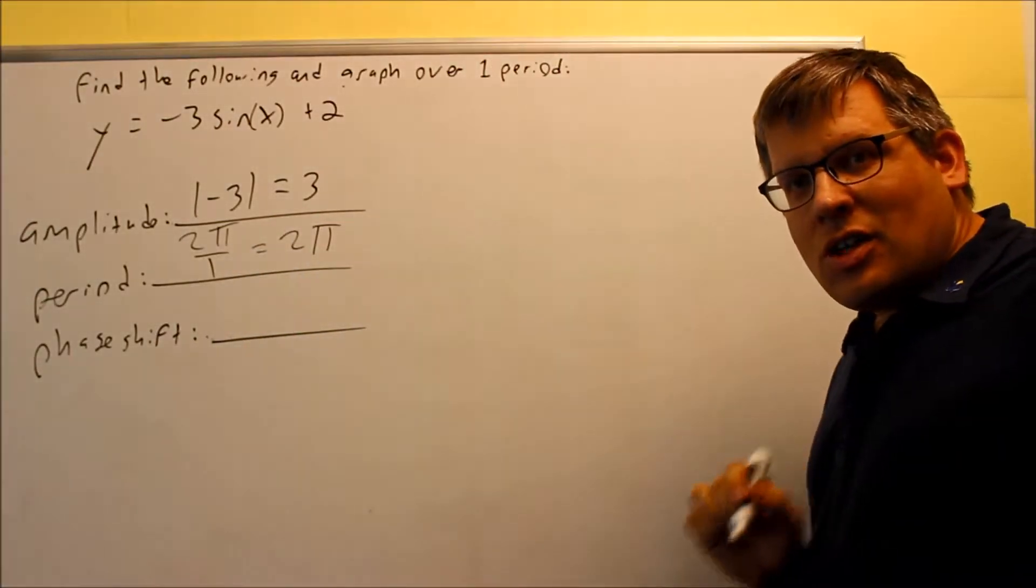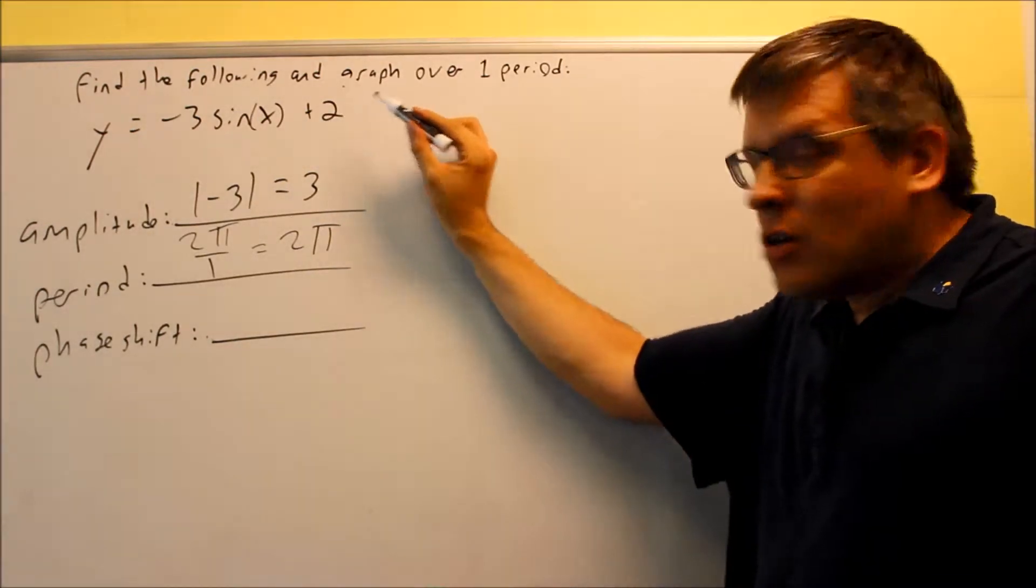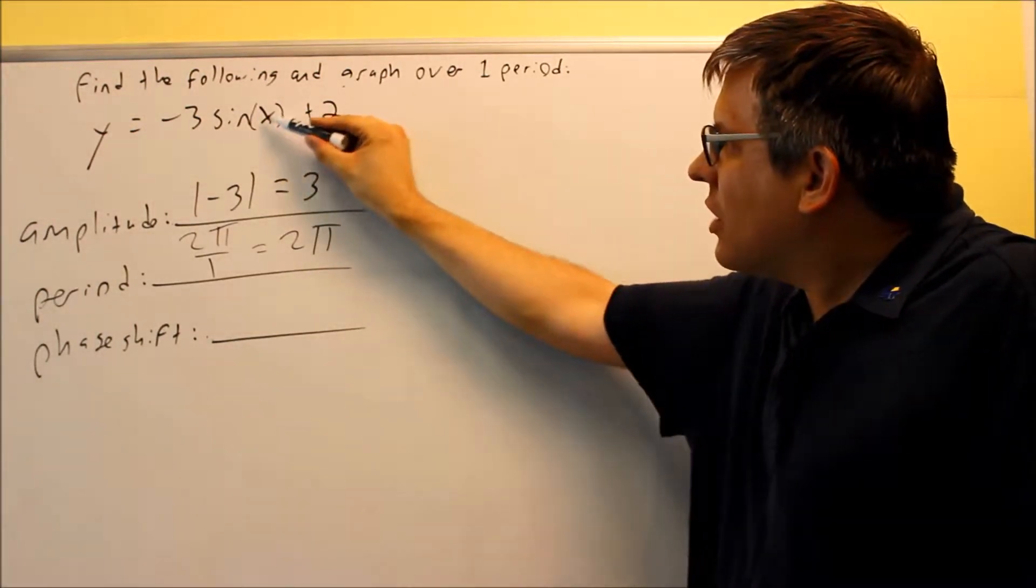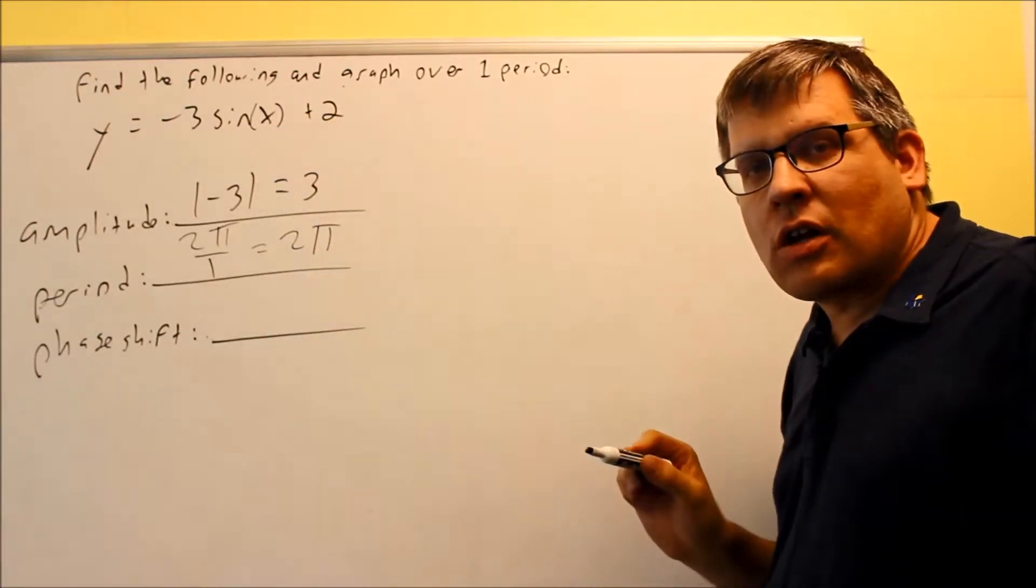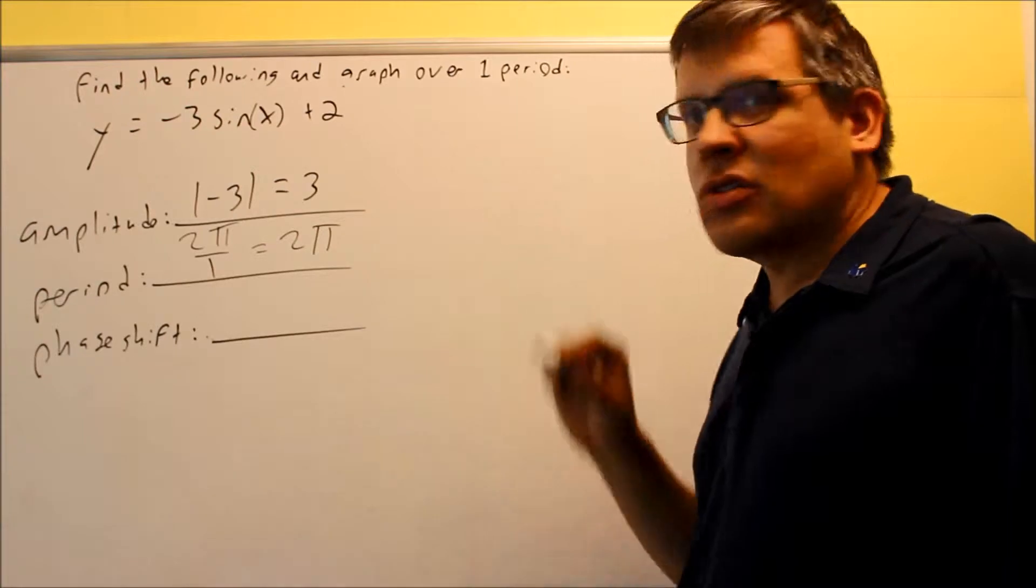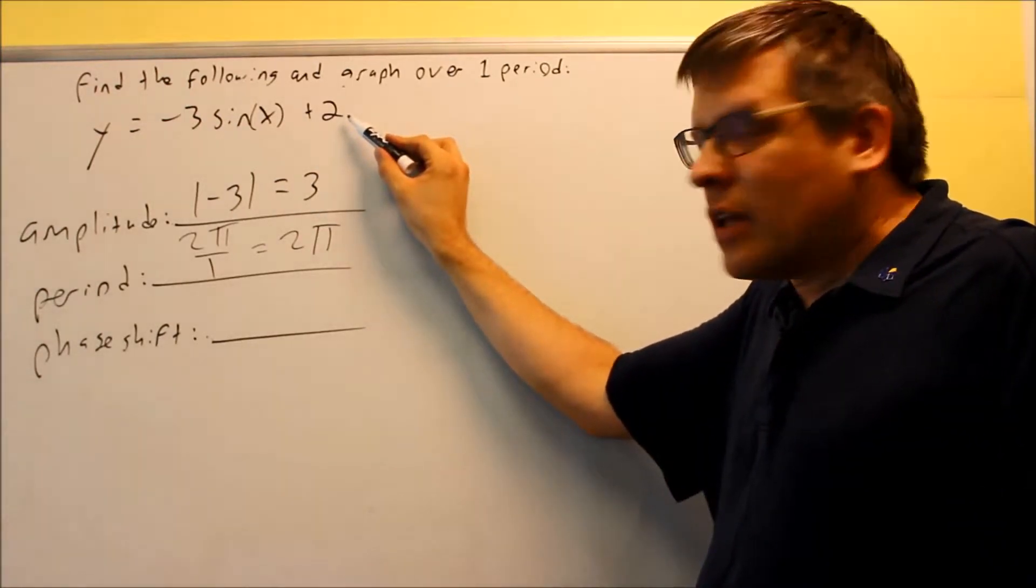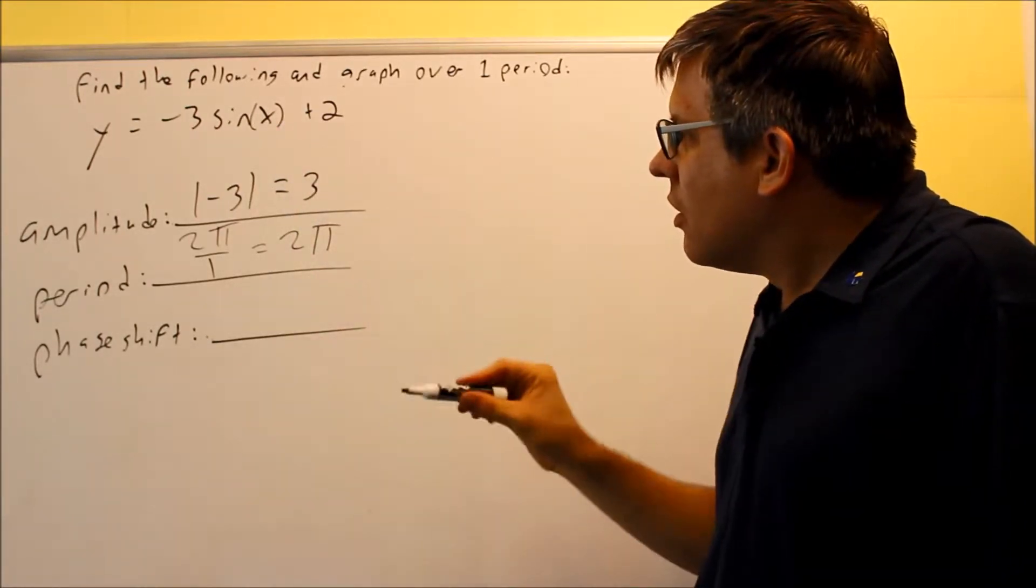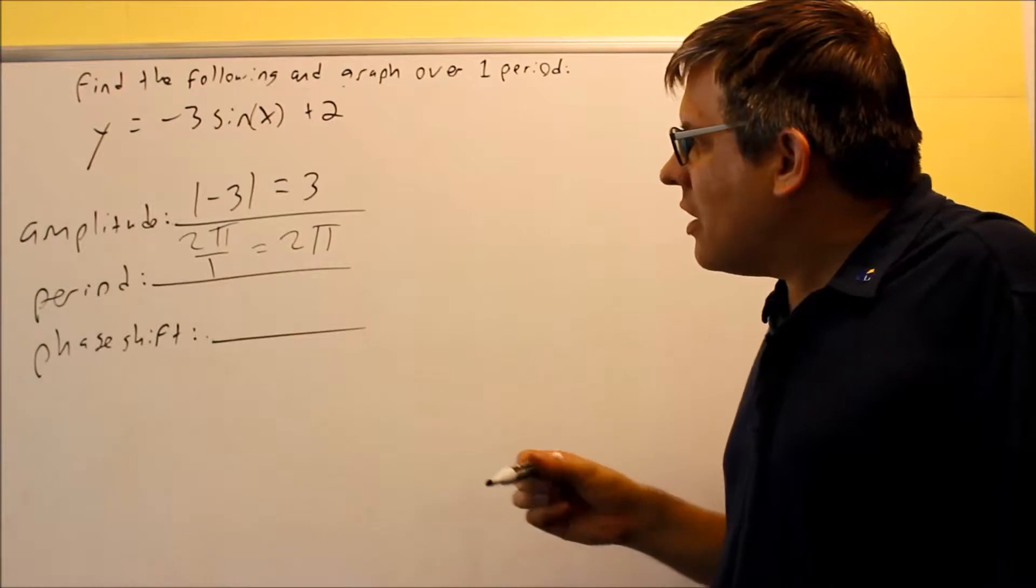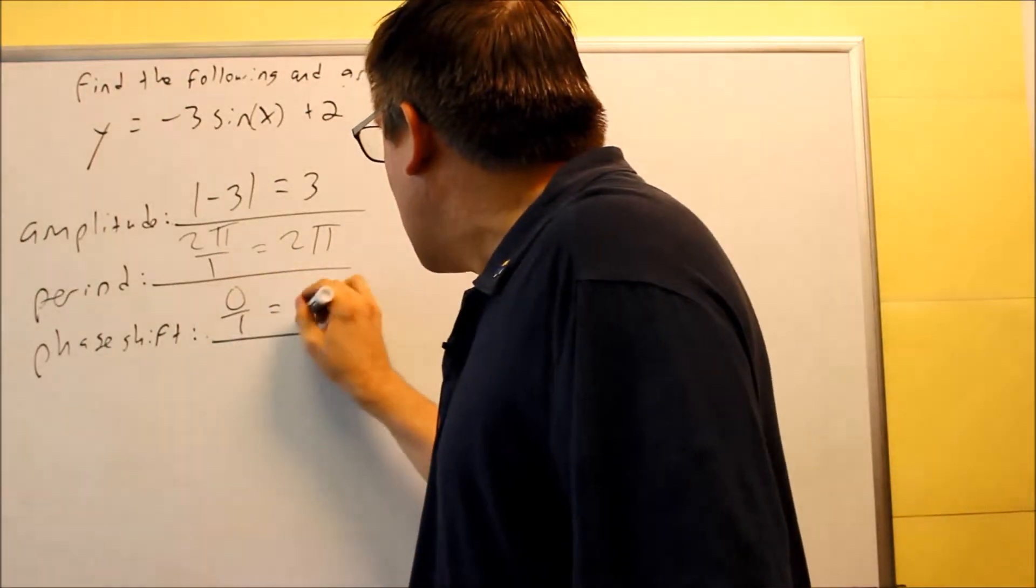Now, my phase shift - it may look like the c value is 2, but it's not. Your c value has to be inside this, sine of something inside. That's why I put these parentheses to indicate x is the only one inside. The 2 would be like a d value, not used for phase shift. My phase shift has to be what's inside here. In that case, my c value is actually 0, so I get 0 over 1, which equals 0.